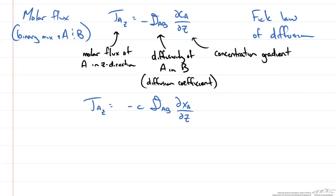That is a common form you might see it. It also can be rewritten in terms of a mass flux, which we denote by a lower case j. And this would be in terms of density, still some diffusivity of A and B, and then in terms of our mass fraction W here.